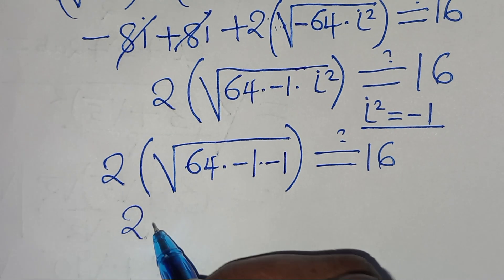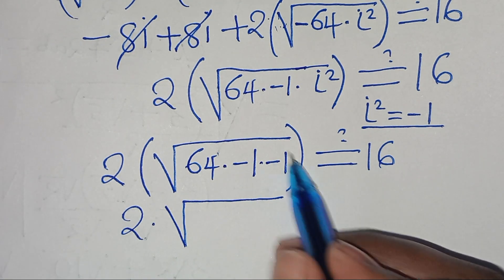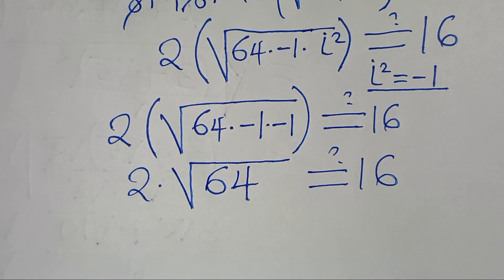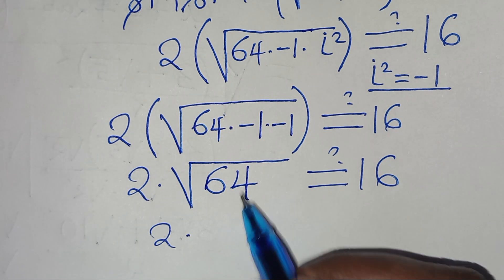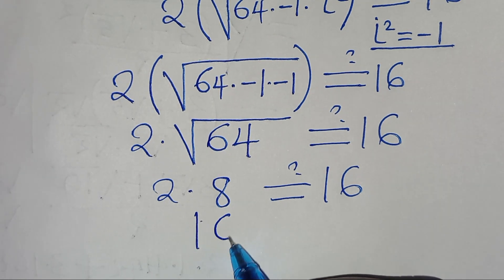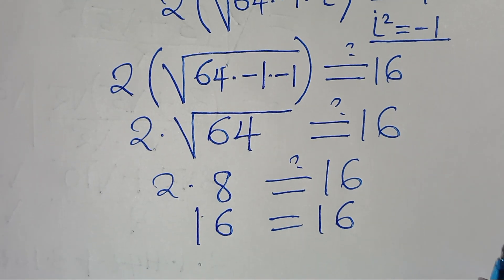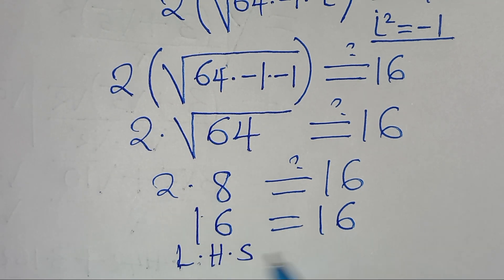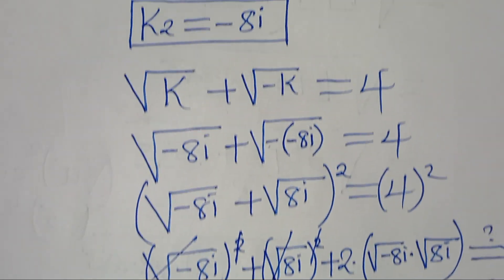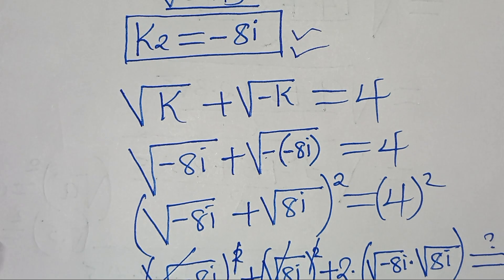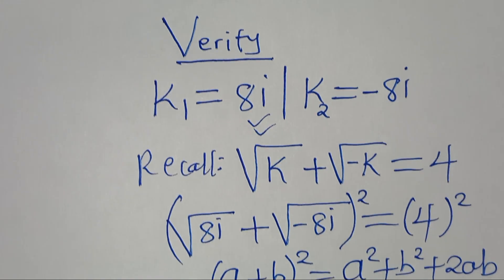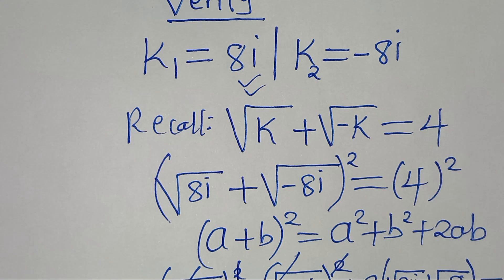Simplifying: minus 8i plus 8i cancels to 0, and we have 2 times the square root of 64 times minus 1 times minus 1, where i² equals minus 1. So minus 1 times minus 1 equals 1, giving 2 times the square root of 64, which is 2 times 8, equaling 16. This confirms the left-hand side equals the right-hand side, affirming that k₂ equals minus 8i also satisfies the equation. Please like this video and subscribe — see you in the next video, bye bye!